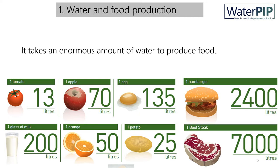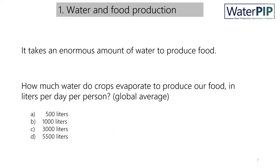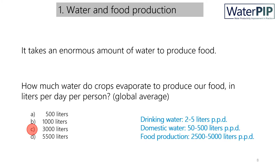This is primarily because of the crops needed to feed the cattle. There is an enormous variety of water requirements among different food products. But let's look at the global average. Do you know how much water it takes for crops to evaporate to produce our food in litres per person per day? Is that around 500 litres, 1,000 litres, 3,000 litres, or even 5,500 litres per person per day? The correct answer is 3,000 litres on a global average, as a rough estimate.